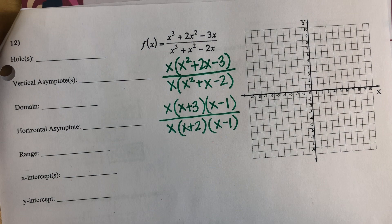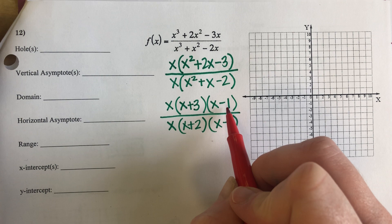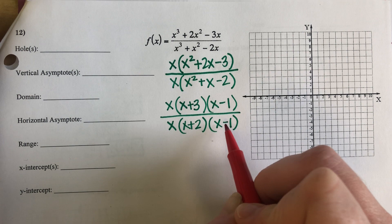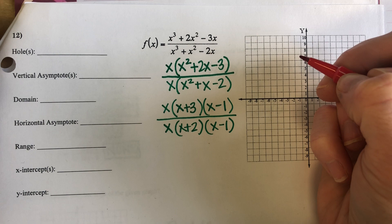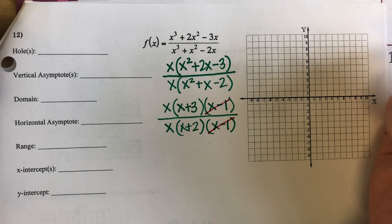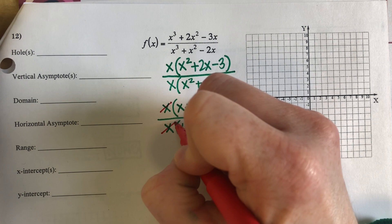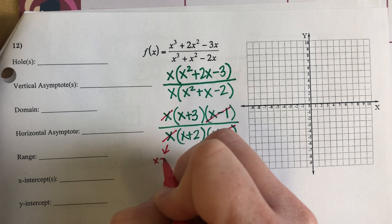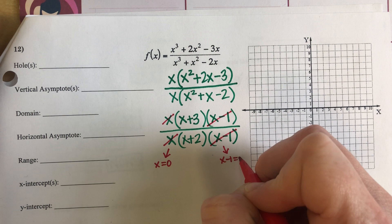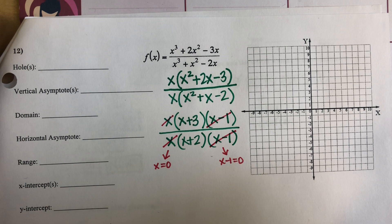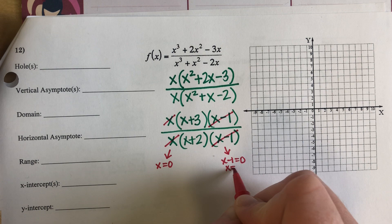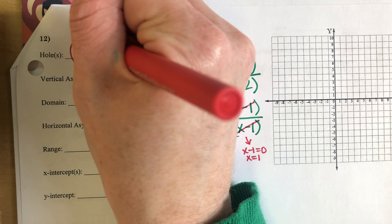What I am seeing is that I have X plus 3 and X minus 1 on the top, and X plus 2 and X minus 1 on the bottom. The X minus 1s are going to cancel, but that's not the only thing — I also have these X's that can cancel. So if I set X equal to zero and X minus 1 equal to zero, that is going to give me the coordinates for my holes. I am going to have a hole when X is 0 and when X is 1.